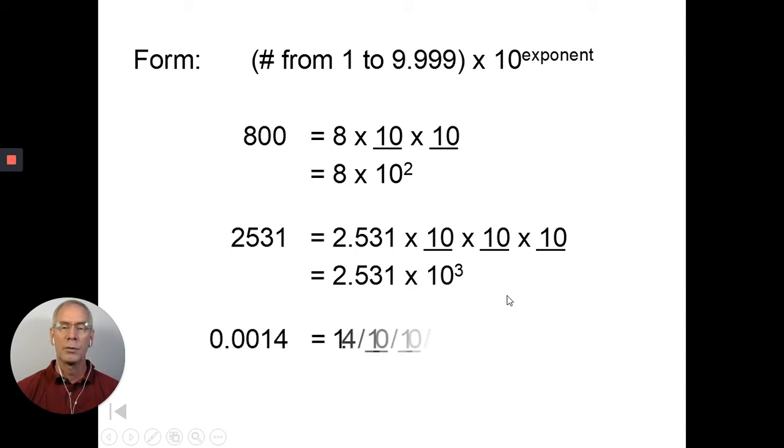Now we can also use it for smaller numbers. If we take this number to get 0.0014 to be between 1 and 10, we'd have to divide by 10, divide by 10, and divide by 10. So we're going to write that 1.4 times 10 to the negative third, because we had to divide it three times.